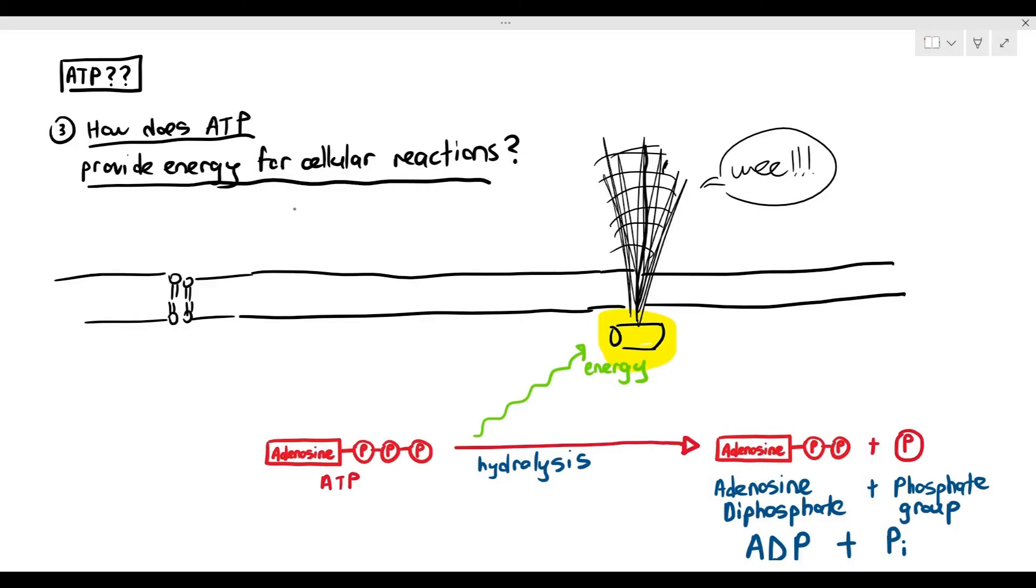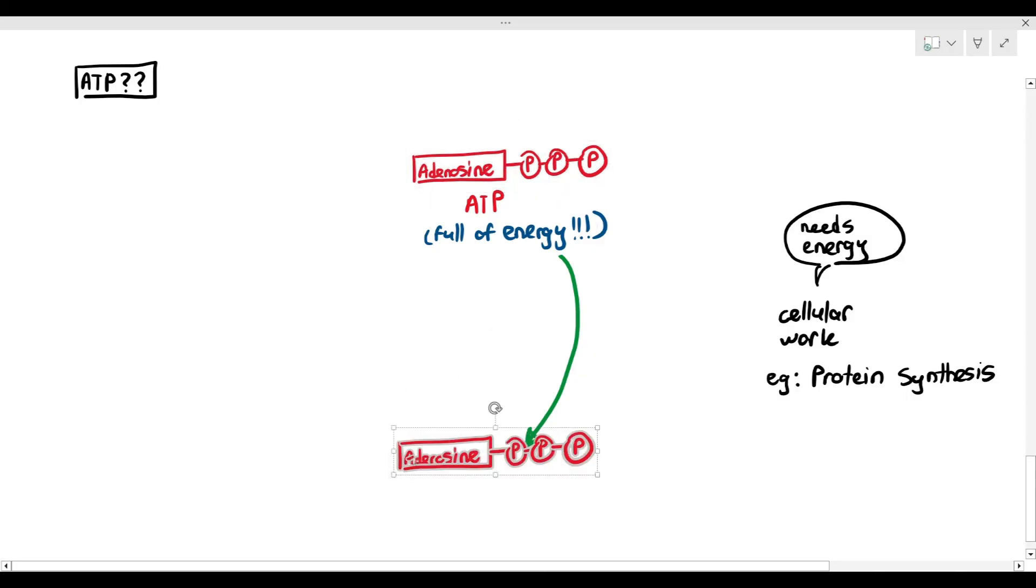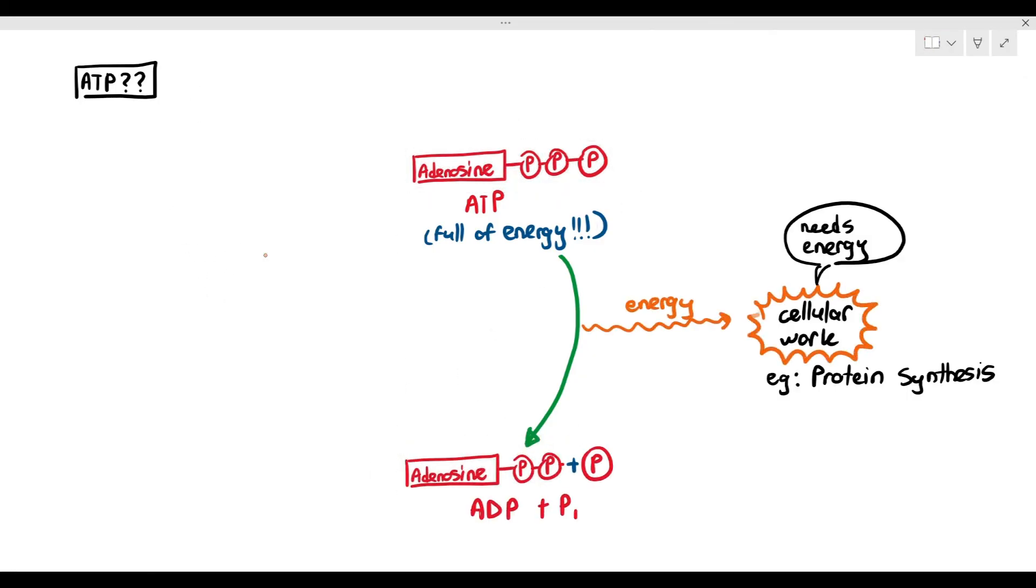When the ATP undergoes hydrolysis, it releases energy, and that energy is the one that is used for the cilium to move. So that's how it works. The ATP is full of energy, and when it undergoes hydrolysis, it will release the energy. And the energy is used for cellular work, for example, protein synthesis. The cell needs to carry out a particular work known as protein synthesis, like transcription translation.